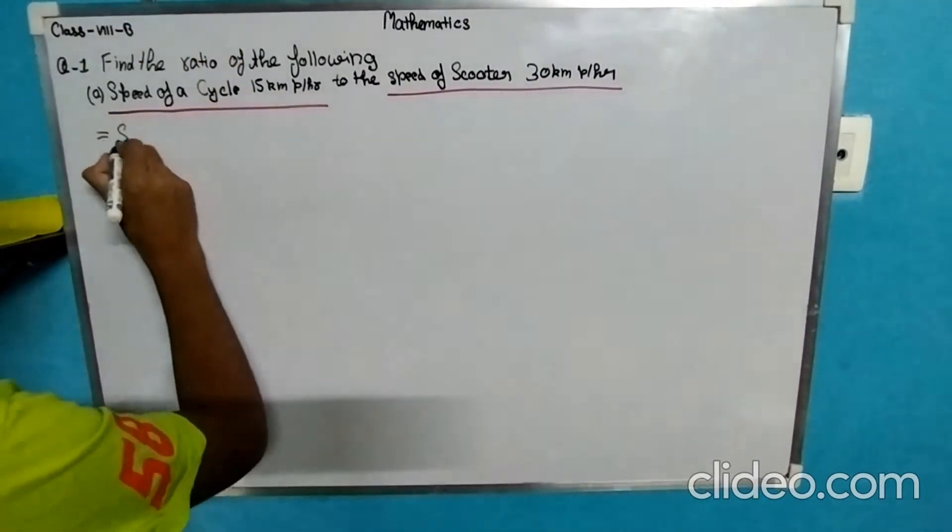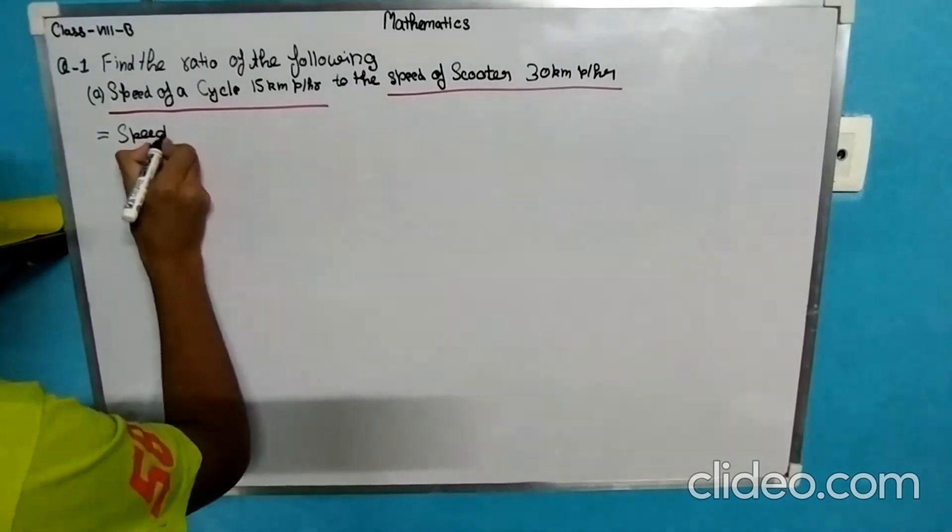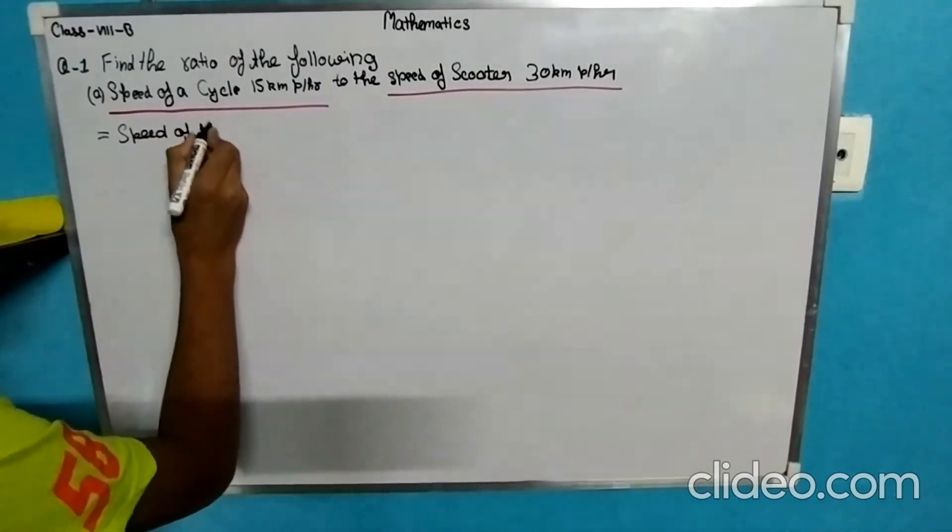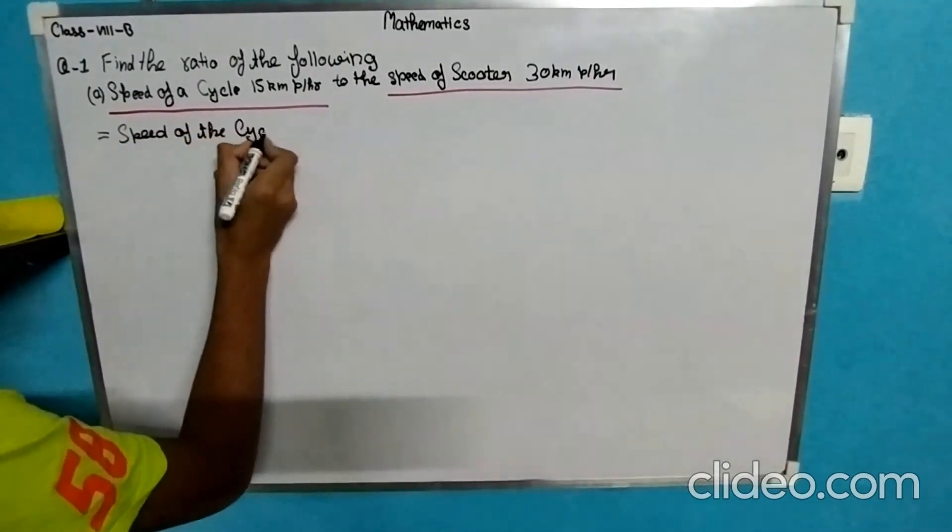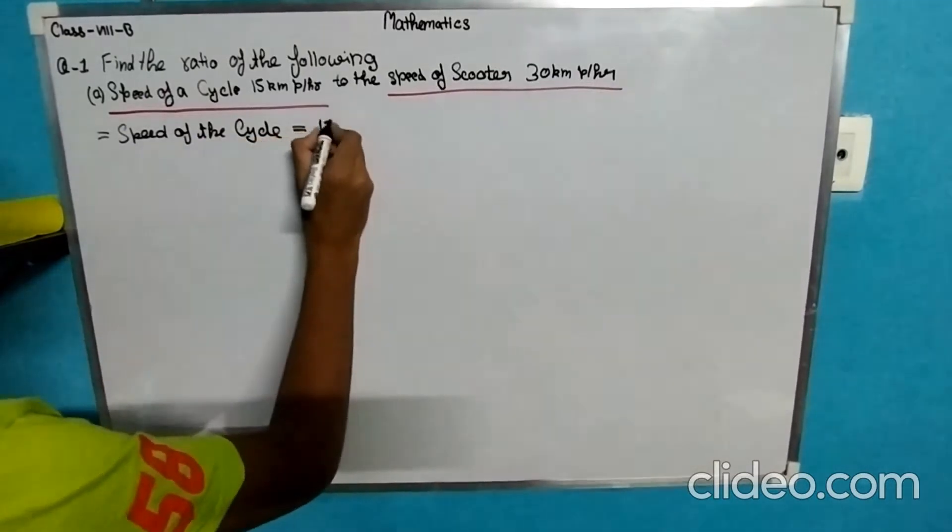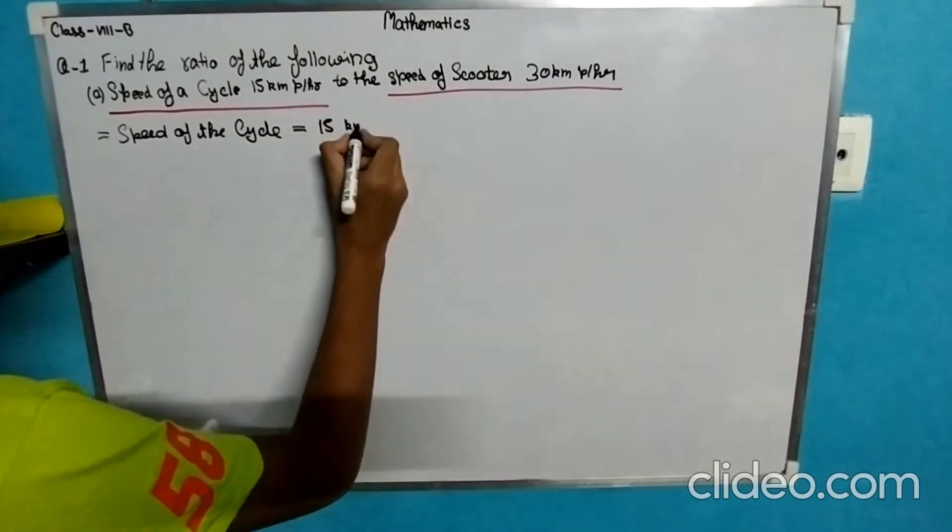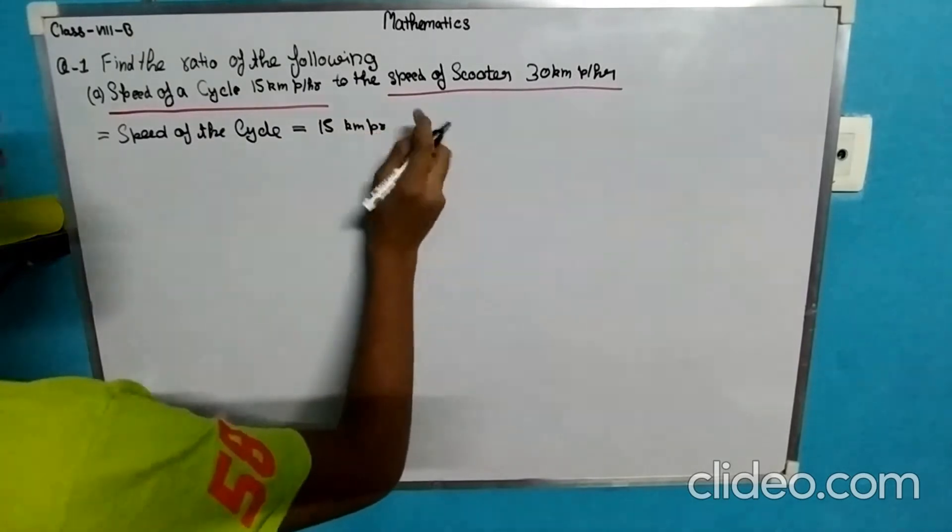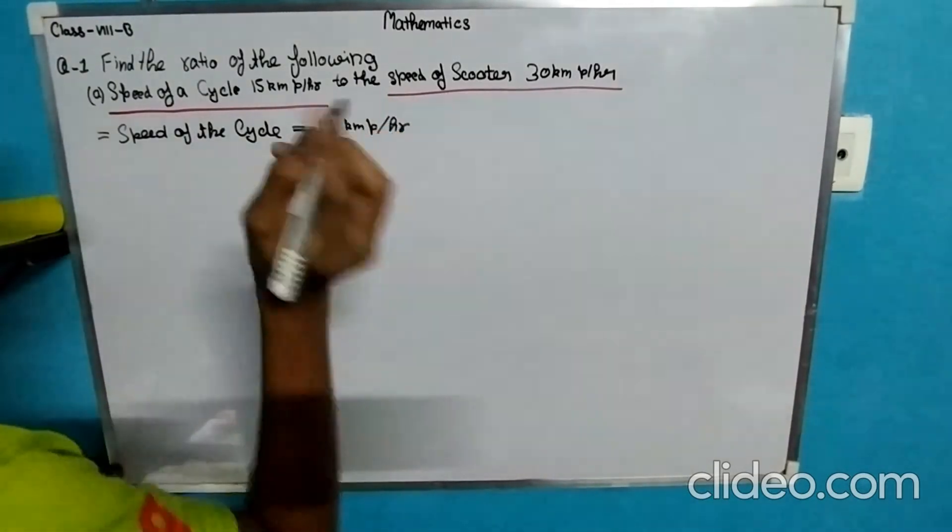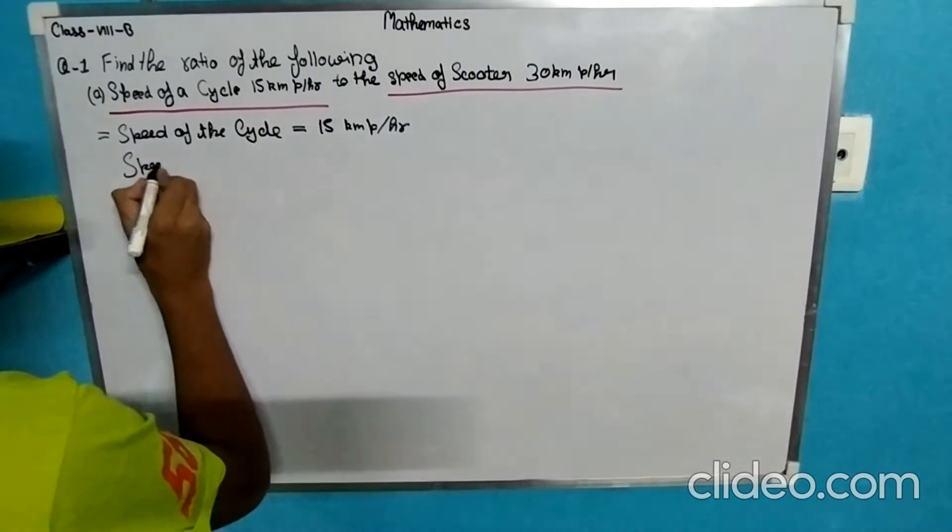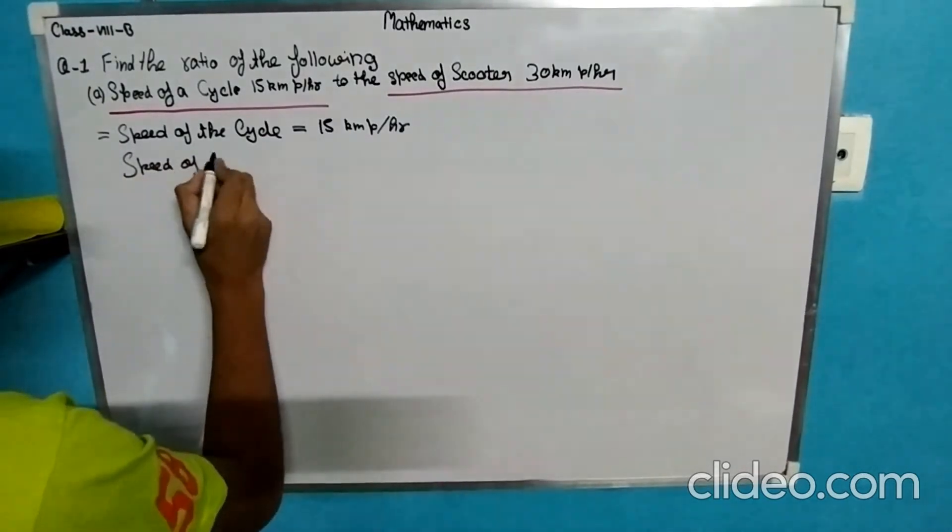Speed of the cycle is equal to 15 km per hour. Then the value for scooter is speed of the